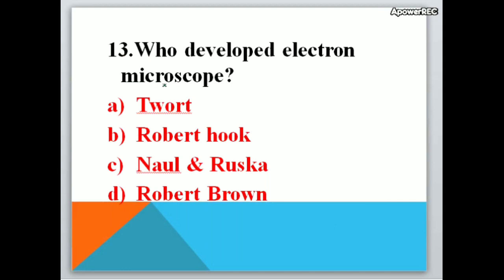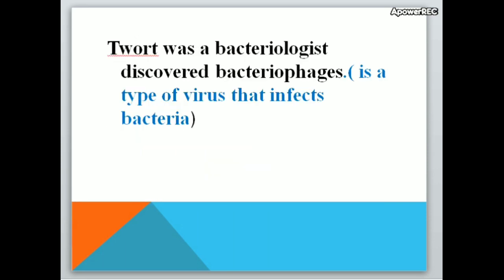Who developed the electron microscope? A. Tort, B. Robert Hooke, C. Knorr and Ruska, D. Robert Brown. Correct answer is Knorr and Ruska — they developed the electron microscope. Tort was a bacteriologist who discovered bacteriophages. A bacteriophage is a type of virus that infects bacteria.